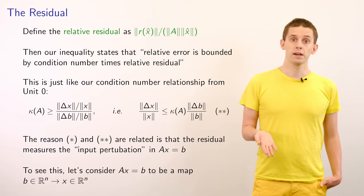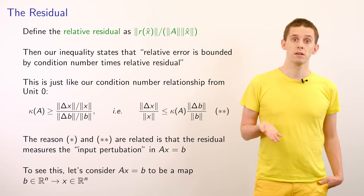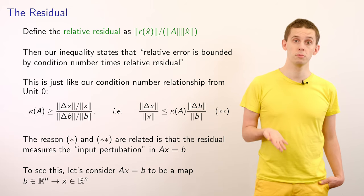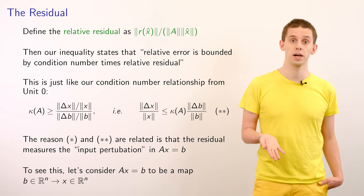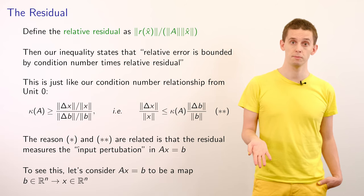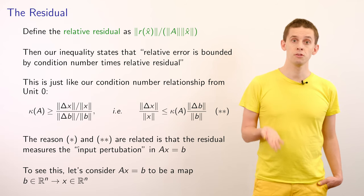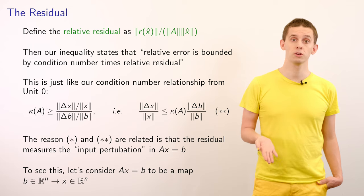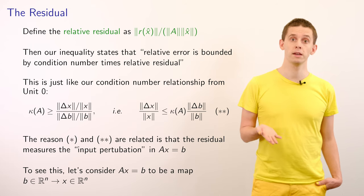So in that case, our inequality states that the relative error is bounded by the condition number times the relative residual. And this is very similar now to how we thought about condition numbers back in unit 0.